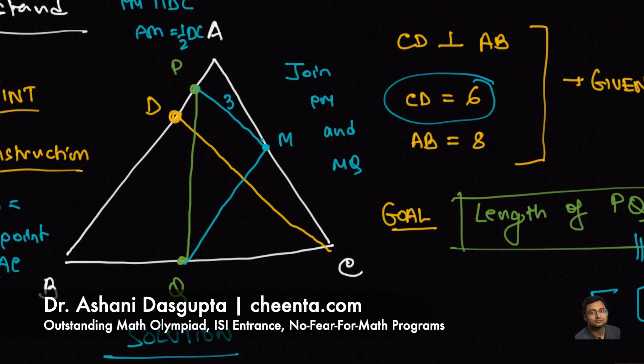Similarly, in this big triangle, MQ is half of AB and parallel to AB. Why? Because M is the midpoint of AC and Q is the midpoint of BC. So you can again apply the midpoint theorem and say that MQ is half of AB and parallel to AB. So that's 4, because AB is 8.